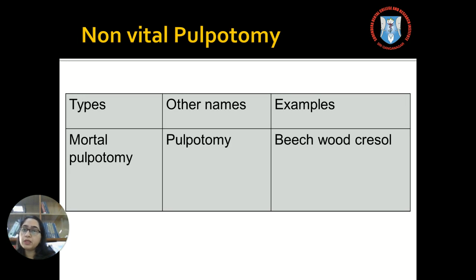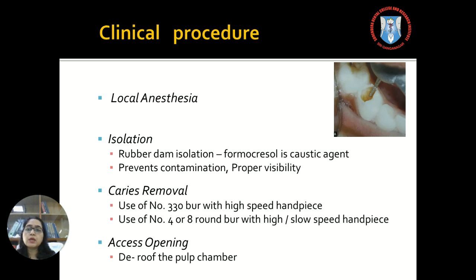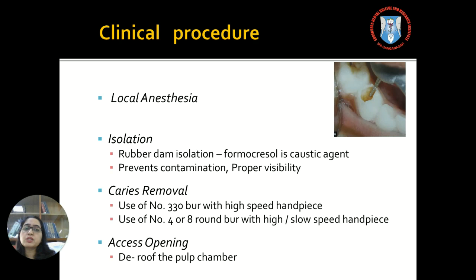Another type is non-vital pulpotomy or mortal pulpotomy, where beechwood creosol is employed, but this is a very controversial procedure and should not be employed. Coming to the clinical procedure: profound local anesthesia is achieved followed by isolation with a rubber dam. Since formocresol is a caustic agent, the rubber dam prevents contact with soft tissues and also prevents contamination, allowing proper visibility of the operating field.